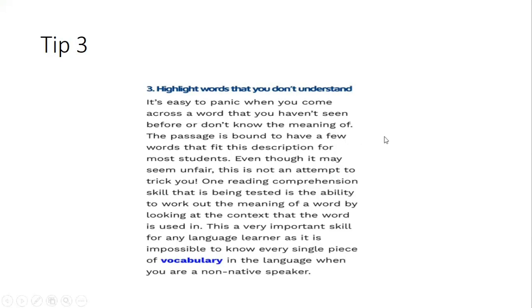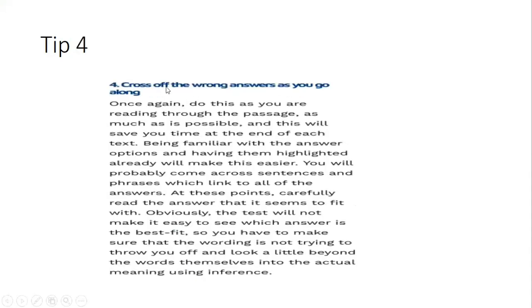Number four: one thing about reading Part B is that sometimes, even after reading the text, you might not really get the answer — you might not be sure whether it's A, B, or C. It happens. In that case, one thing you can do is eliminate the wrong answers. Sometimes you might look at A, B, and C and still be confused. You can start answering by elimination.